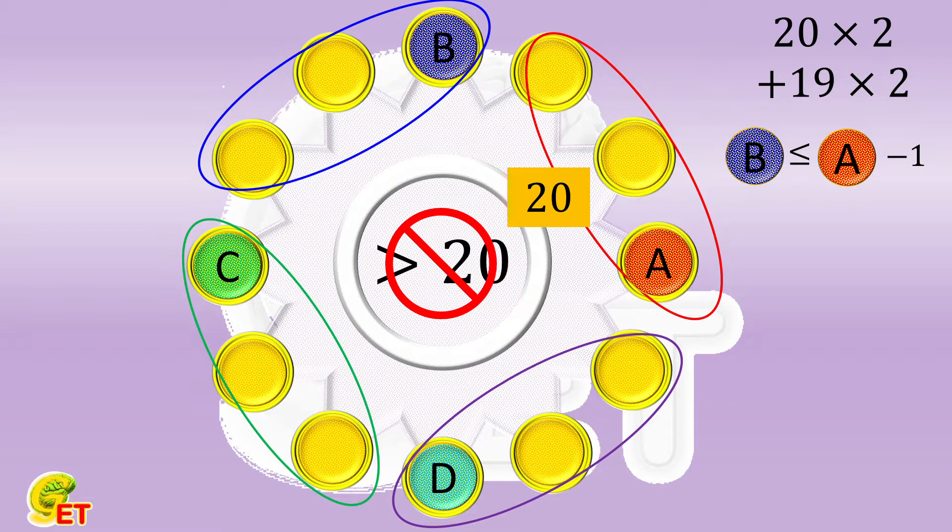However, if the summation of this group is 19, we have another choice. Because at this time, it is also possible for b to be bigger than a by 1.